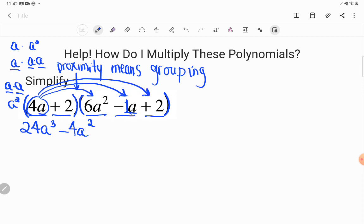Okay, now let's keep going. 4a times positive 2. Well, 4 times positive 2 is positive 8, and there's only a single a this time, so that will be a. Great.